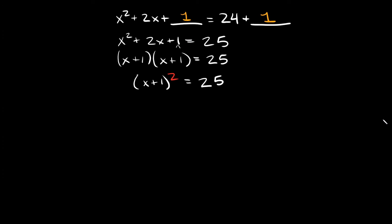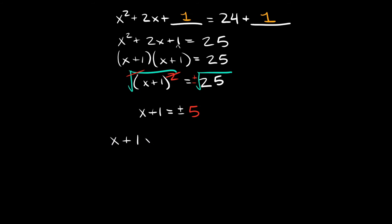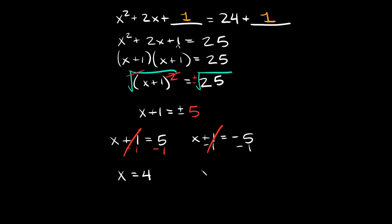Taking the square root of both sides: x + 1 = ±√25 = ±5. Splitting into two equations: x + 1 = 5 gives x = 4, and x + 1 = -5 gives x = -6. There are your two answers.